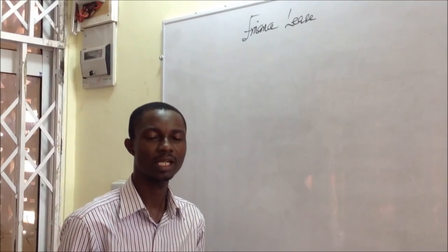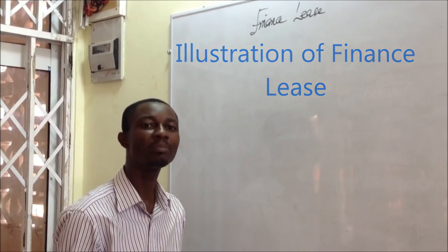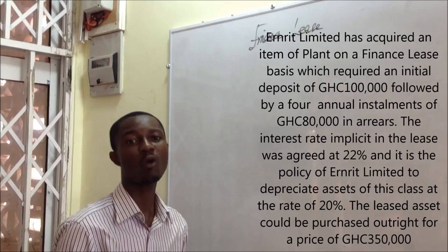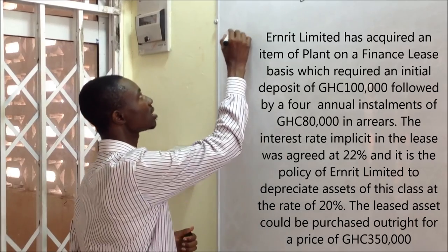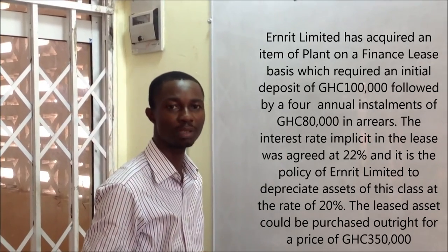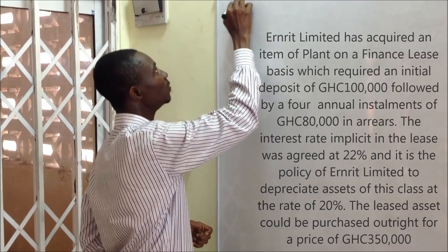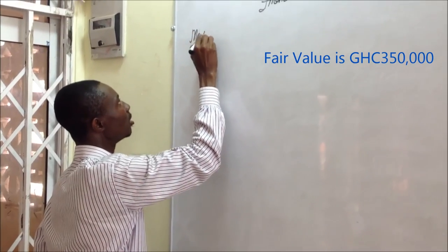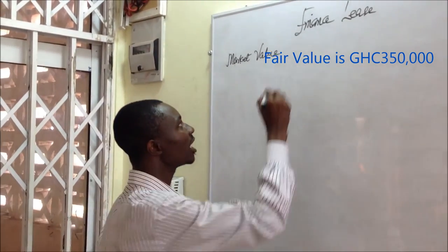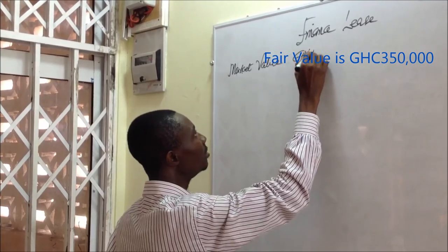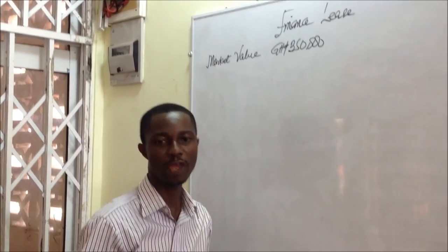To illustrate the treatment of finance leases, let's assume that a company, Enrich Limited, has acquired an item of plant on a leasehold basis. The question is, how much could the company acquire these assets if they were buying it outright? Assuming that the market value, or the cash price of the assets, if they were acquiring it immediately, is $350,000. But the company opted to go in for a finance lease.